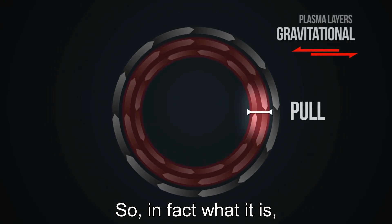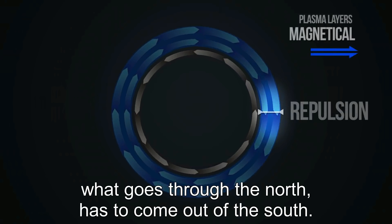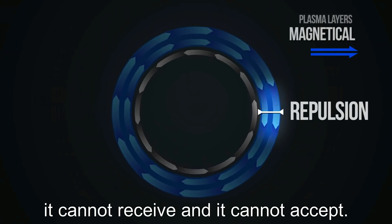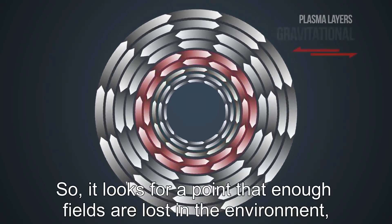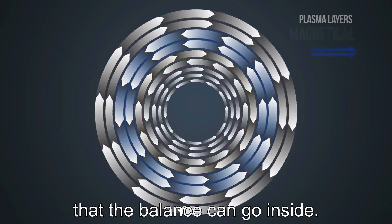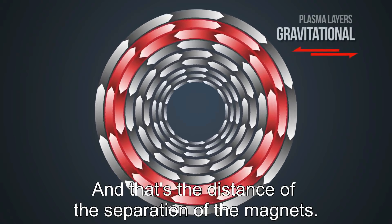So in fact, what goes through the North has to come out of the South. And if North cannot allow more than a certain amount to come out, it cannot receive and it cannot accept. So it looks for a point that enough fields are lost in the environment that the balance can go inside. And that's the distance of the separation of the magnets.